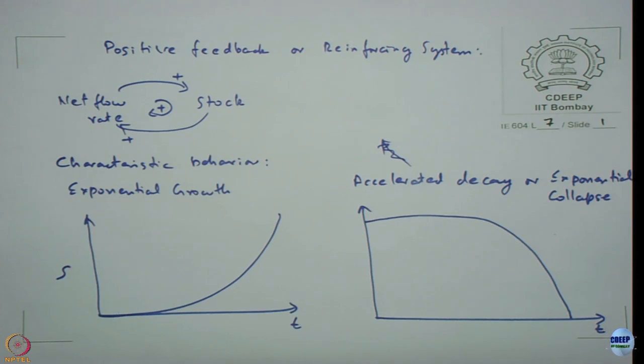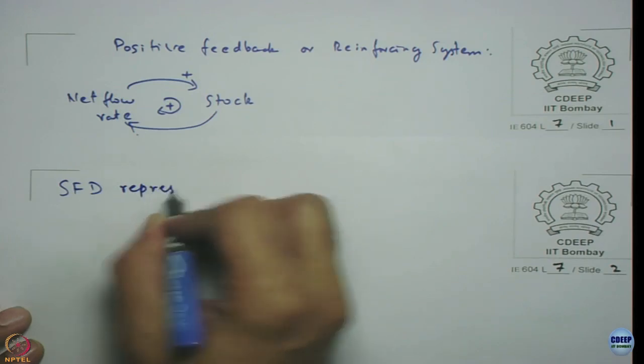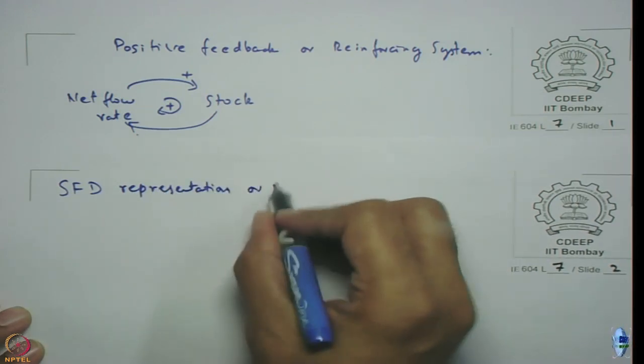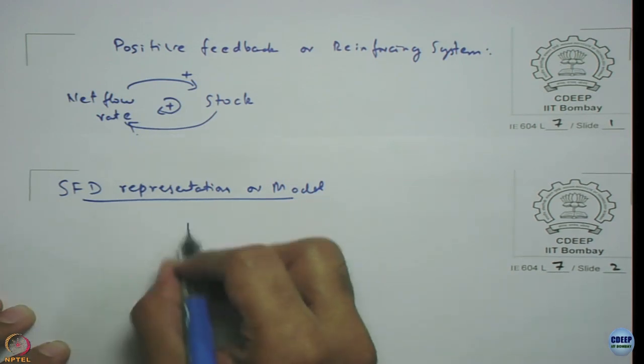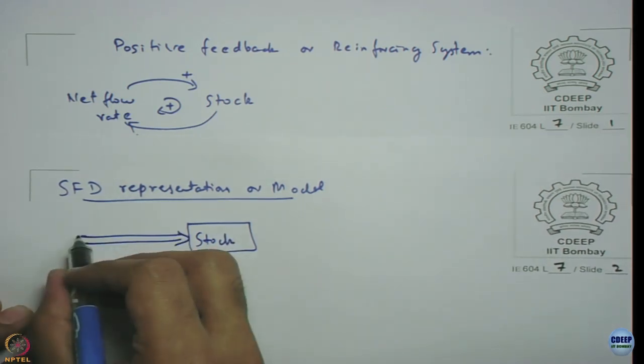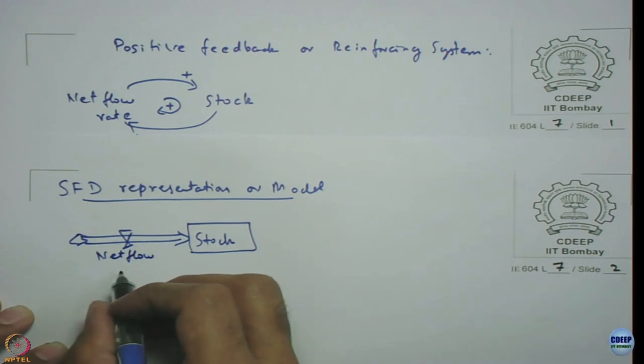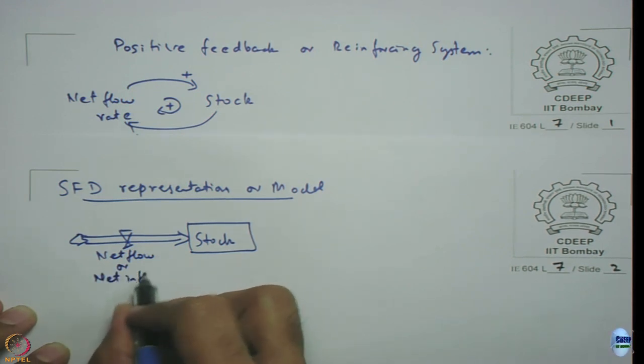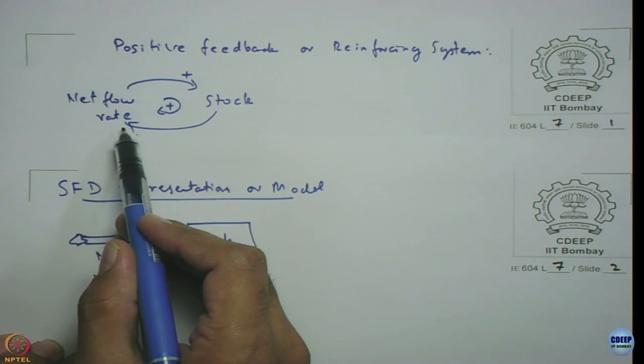To model this as a stock flow diagram, let us see how we are going to go about doing that. Let us look at the SFD representation or model. There is a stock, it is a rectangle, and there is a net flow rate or net inflow.